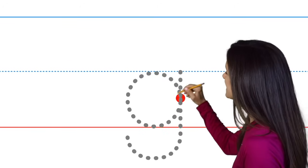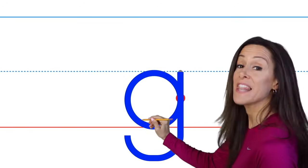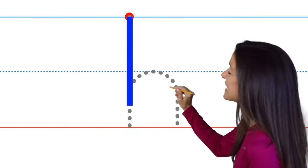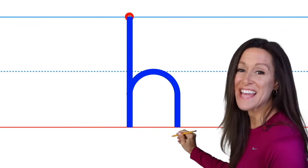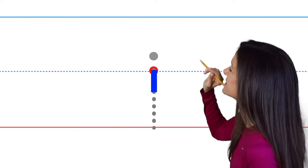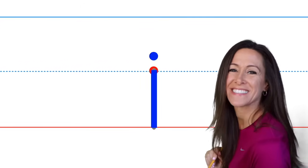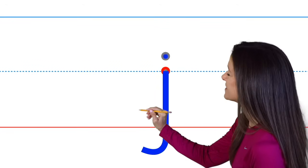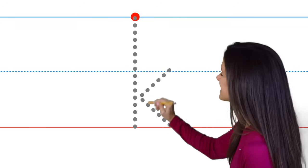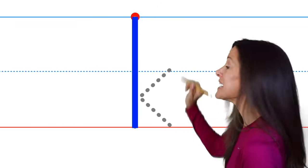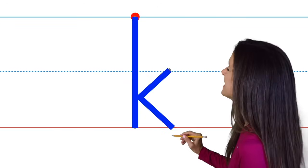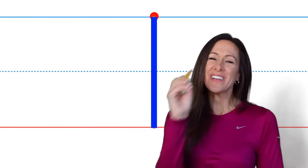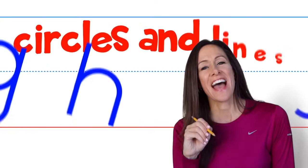G is a circle line down, curve to the left. H is a line with a hill next to it. I is a line with a dot on top. J is a line curved down, left with a dot. K is a line with two slant lines up and down. L is a line, now you know how.